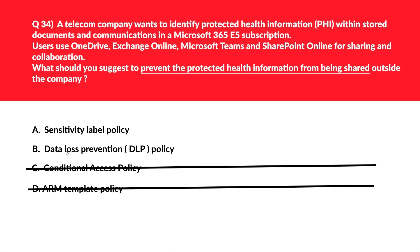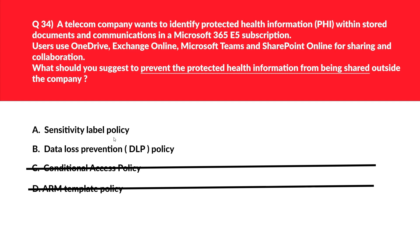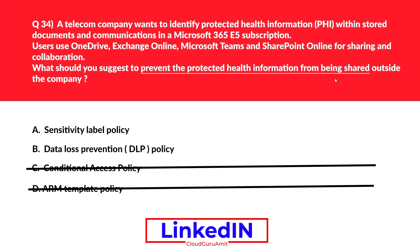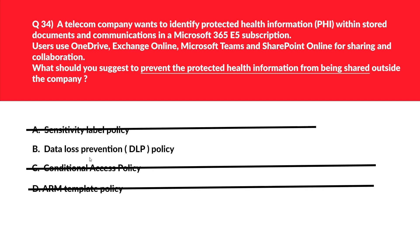Option E — sensitivity level policy — can classify protected health information (PHI), but cannot prevent it from being shared outside the company as required by the question, so E is incorrect. We are left with option B: Data Loss Prevention (DLP) policy. The DLP engine uses sensitivity labels to detect sensitive information and prevent it from leaving the protected environment.